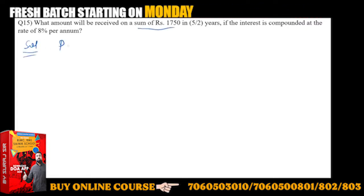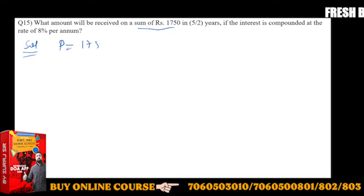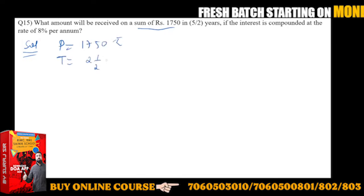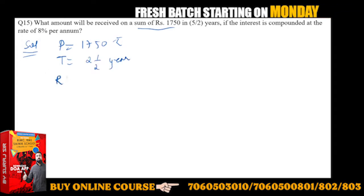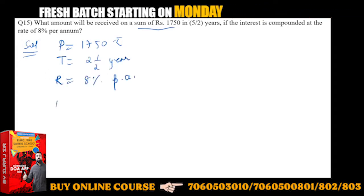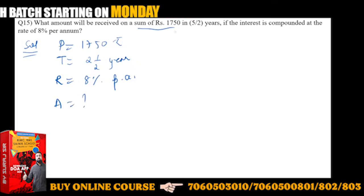Solution: The principle is given, P = 1750 rupees. Time is given, T = 5/2, which means two and a half years. Rate is given, R = 8% per annum. You need to find the amount.